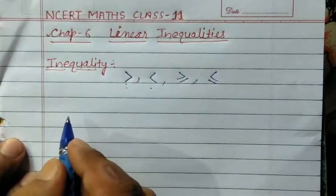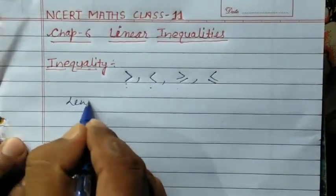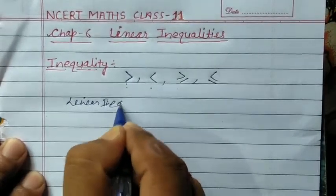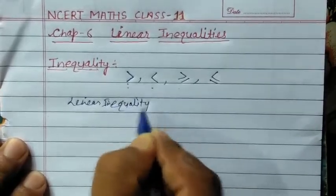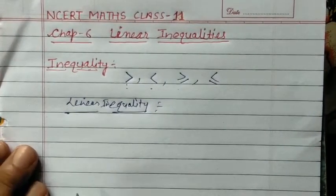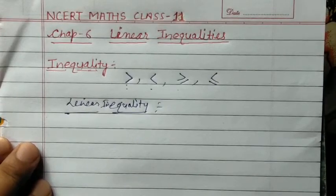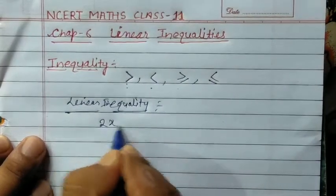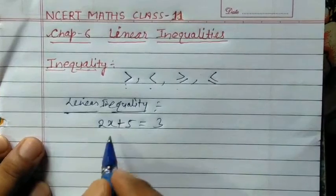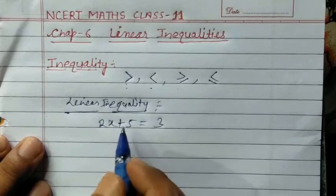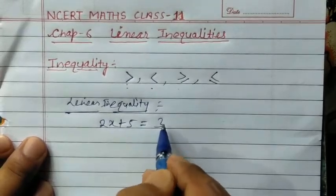Now, discussing about Linear Inequality. Linear Inequality — you already know what a linear equation is. Linear equations are those equations which have degree 1. If any equation has degree 1, then that equation is called a linear equation. For example, 2x + 5 = 3 — the degree of this equation, meaning the power of the variable, is 1. So this is a linear equation, not an Inequality.